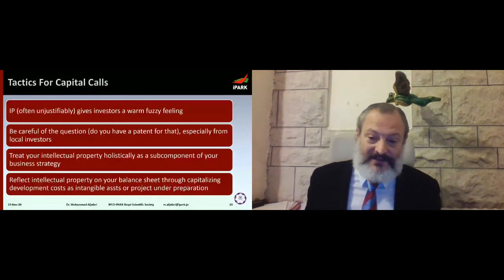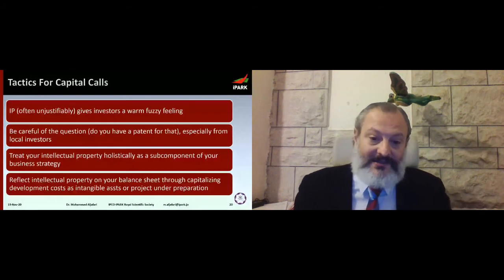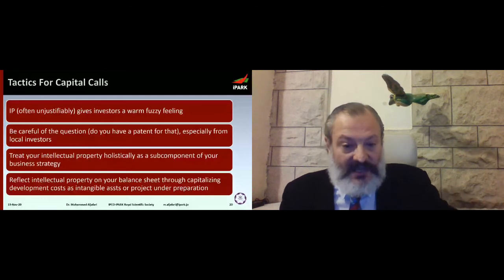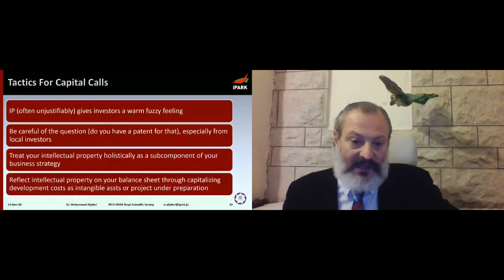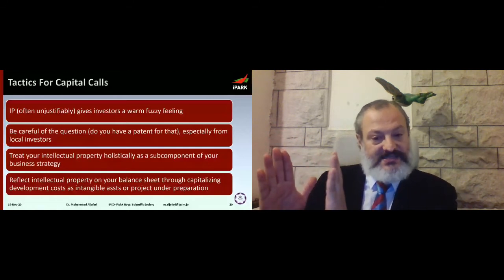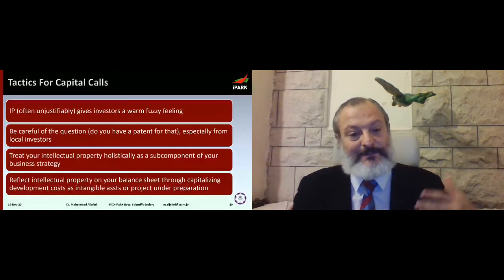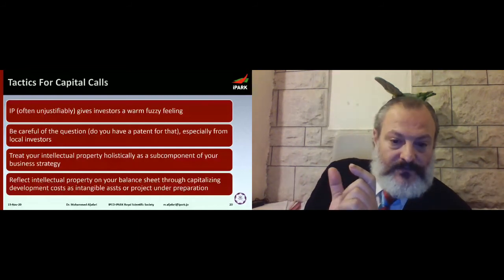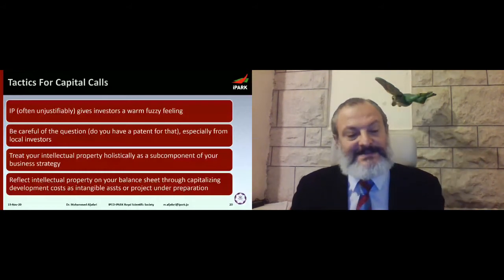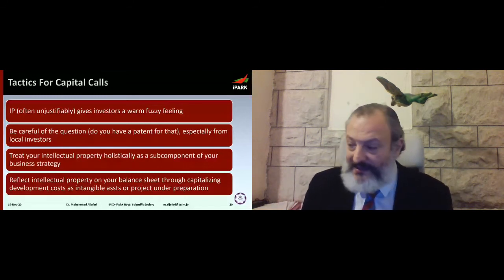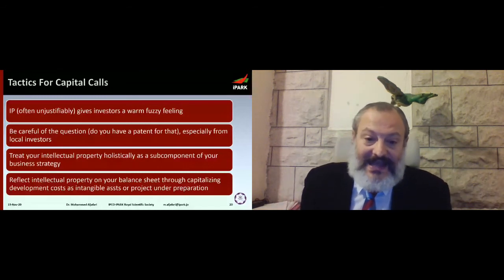The last piece of advice: reflect your intellectual property on your balance sheet. For example, if I'm spending money on a project, I can take that money and capitalize it on my balance sheet — the salary paid to a coder for six months is an asset, not an expense. This reduces your expenses and expands your balance sheet. These finance tactics are important — get help doing this, and do not get help from lawyers doing this, because lawyers will tell you a truth that is not necessarily the truth you want to hear.